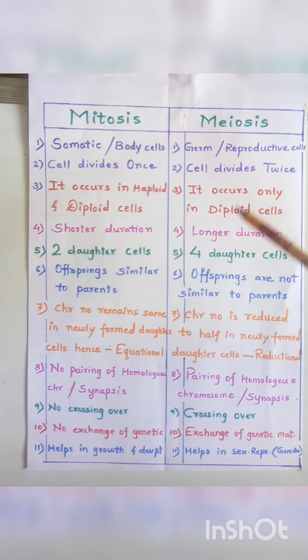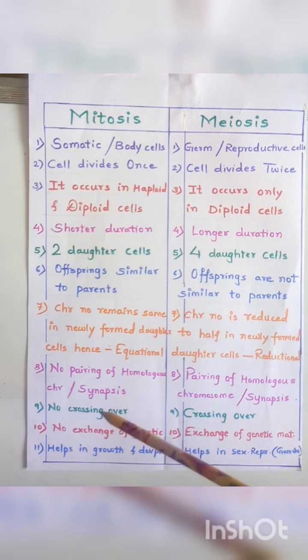This process of pairing of homologous chromosomes is called synapsis. This is asked for MCQ or answer in one sentence: synapsis is a process in which pairing of homologous chromosomes takes place.